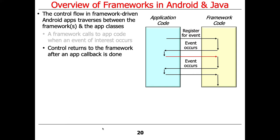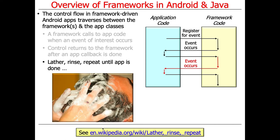The framework doesn't really know what you do in the hook method — it just knows you need to do it at that point. After the callback is finished — whether it's onCreate, onStart, onStop, onReceive, or whatever — control goes back to the framework. You just keep doing this over and over again until you decide to shut your app down or it gets killed by the underlying activity manager service.